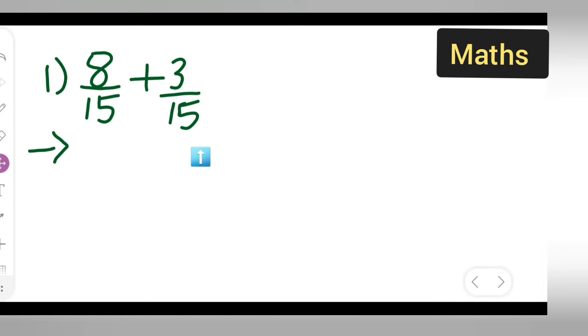plus 3 upon 15. Now you all can see the denominators are the same, so what you'll have to do first is write this as it is. When you are writing the solution, write it as it is first: 8 upon 15